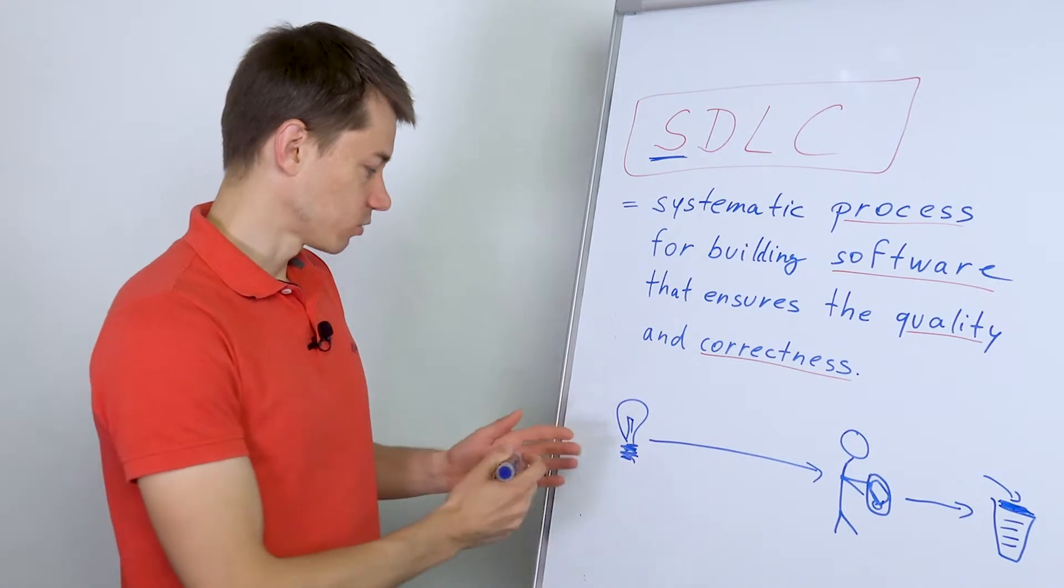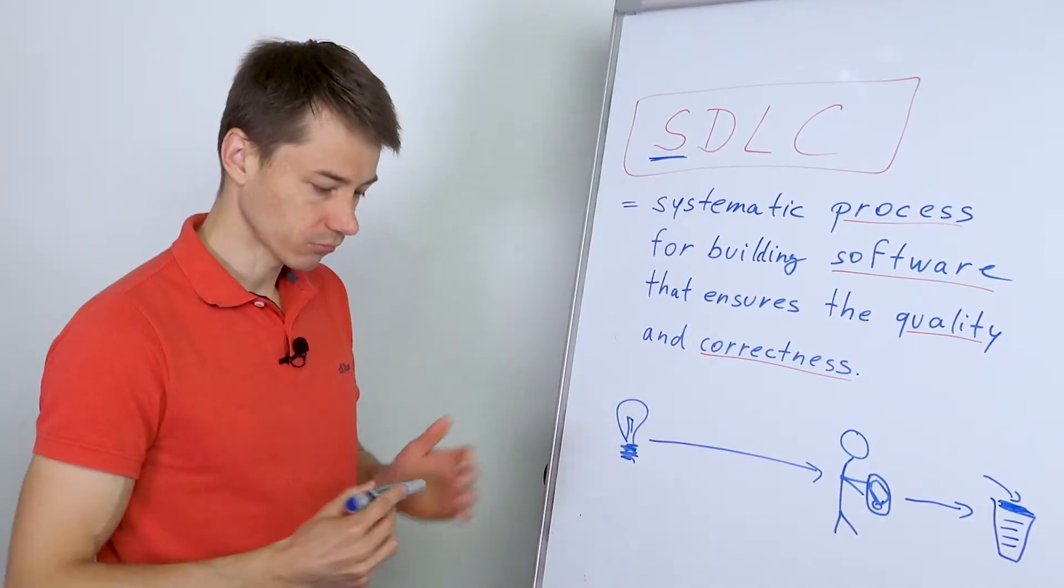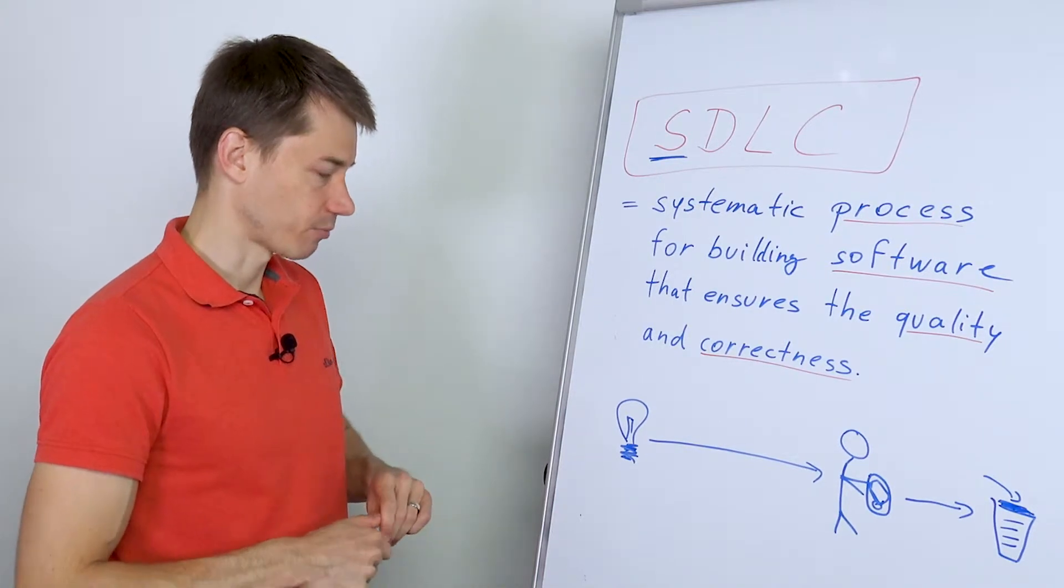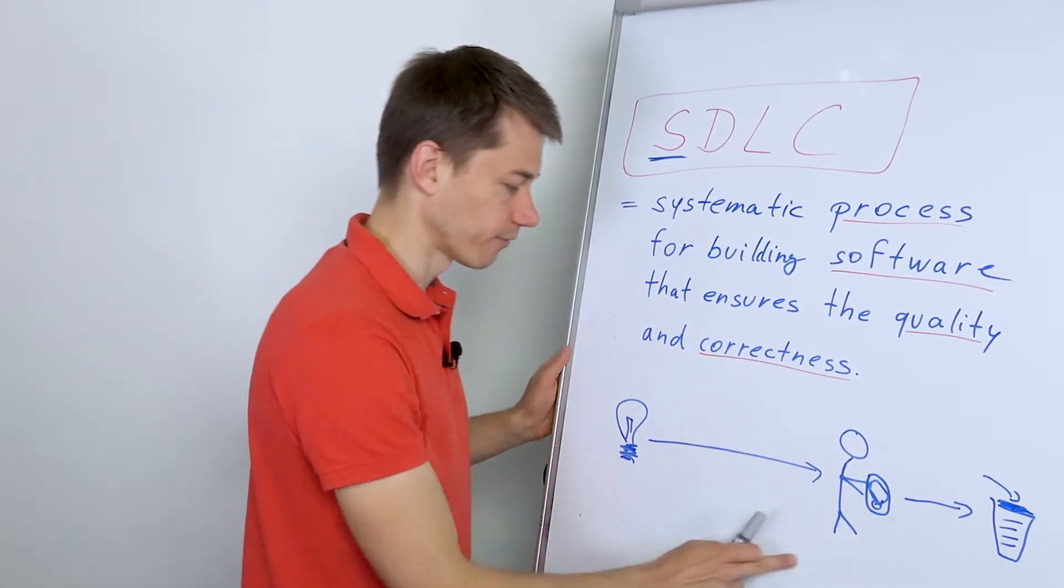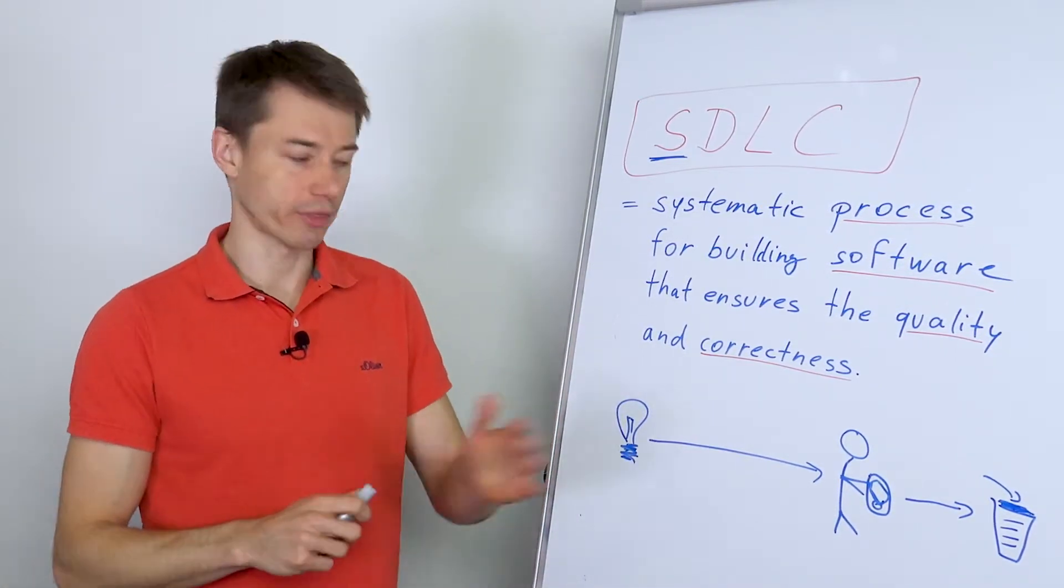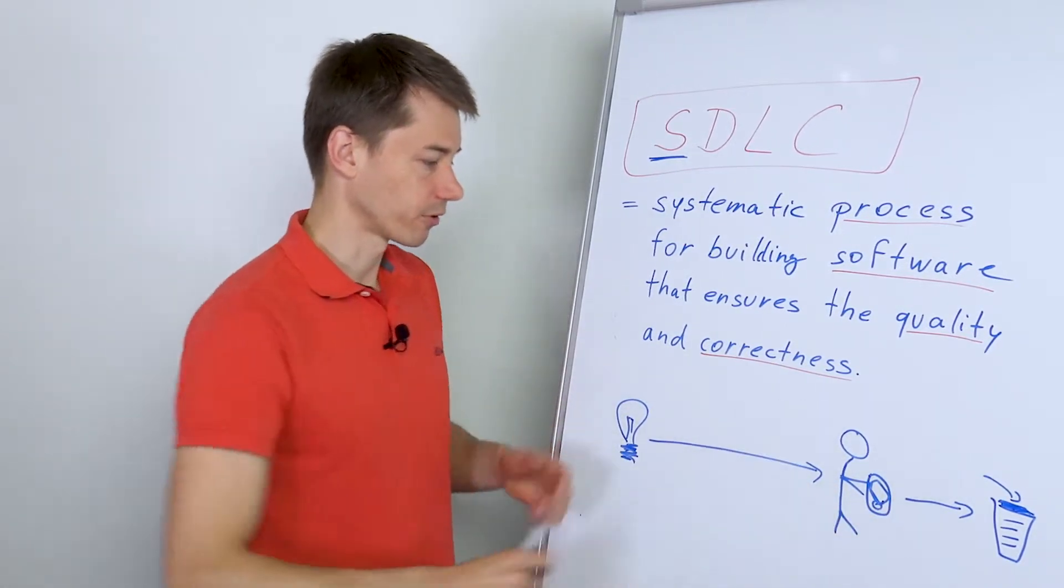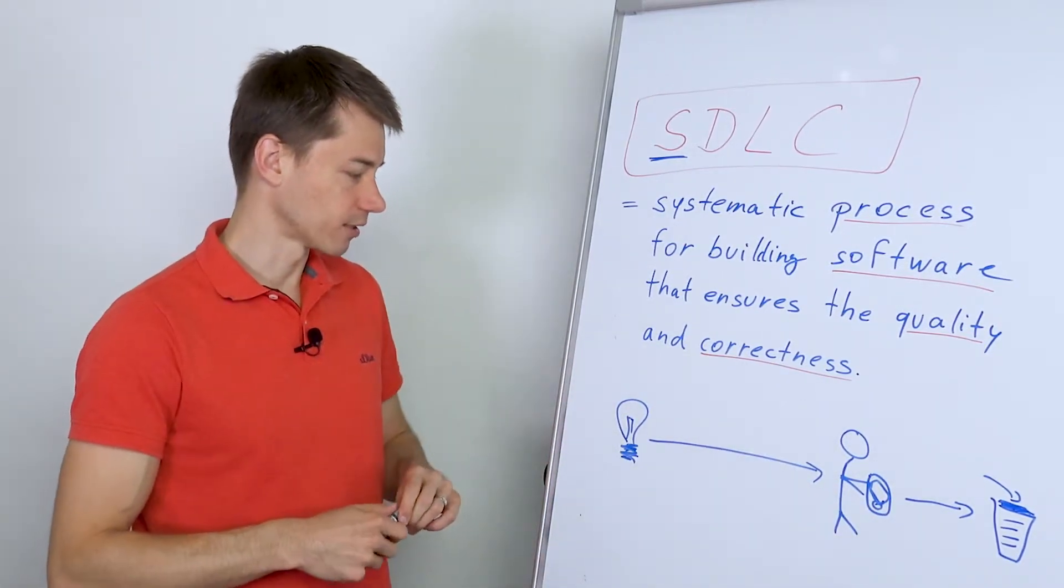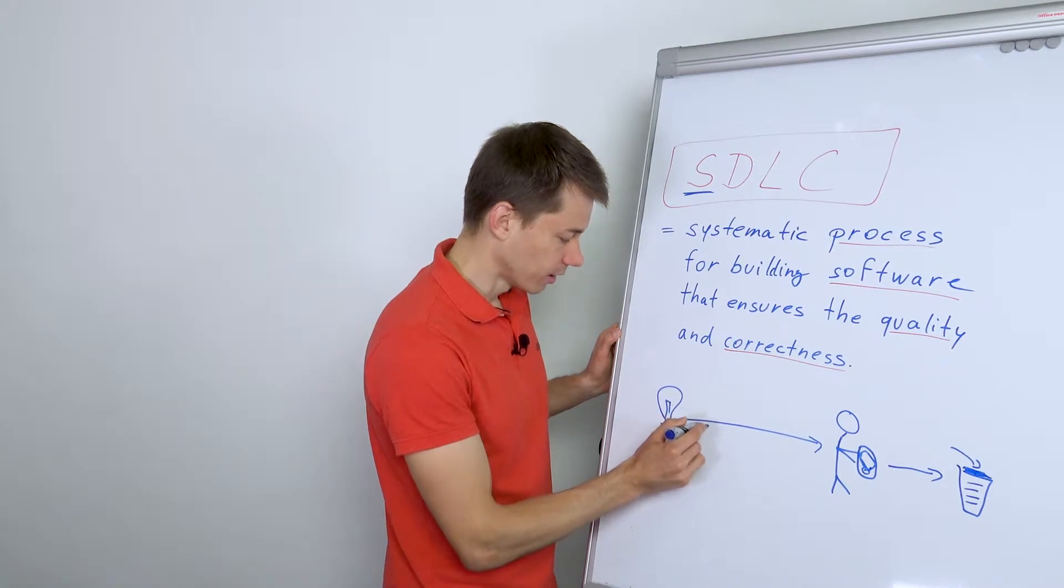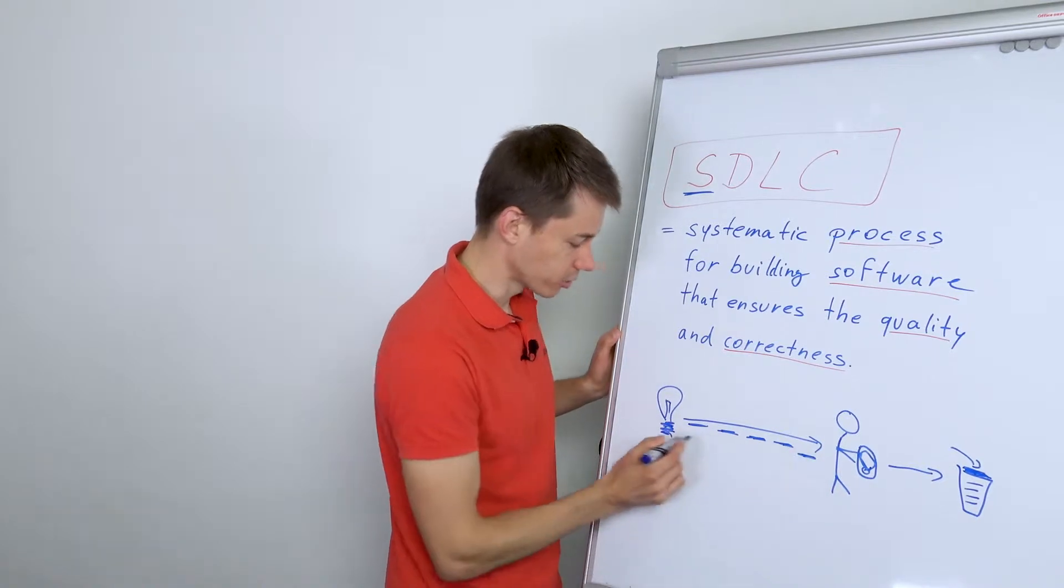So it guides you from the initial idea to dropping the project. Hopefully you'll have a few years of fruitful use where the project increases revenue or whatnot. But eventually it needs to come to an end. The software development lifecycle identifies the stages here - there could be three, four stages.